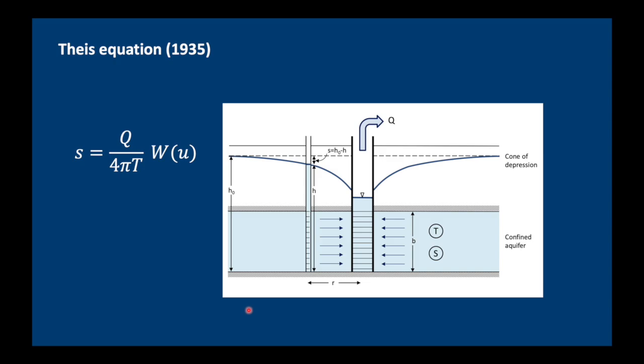Here is the Theis equation, which applies to drawdown at any distance from a pumping well at any point in time. And it's quite simple. S equals the discharge of the pumping well Q divided by 4 times pi times transmissivity times W(u). Now W(u) is called the well function and we'll have a look at it in a little while. The u of the well function equals the distance r squared from the pumping well times storativity divided by 4 times transmissivity times time. So notice that the u term includes time. So S, the drawdown is related to the well function and u is related to time.